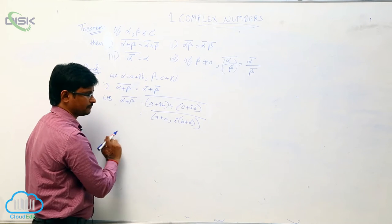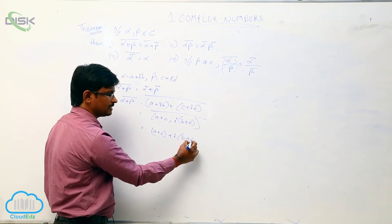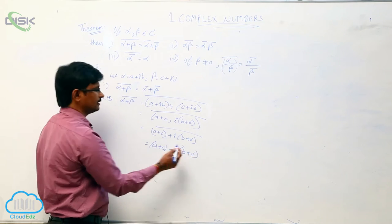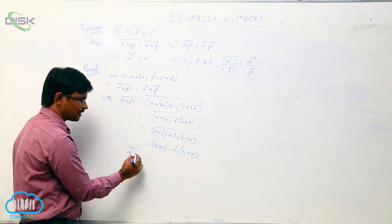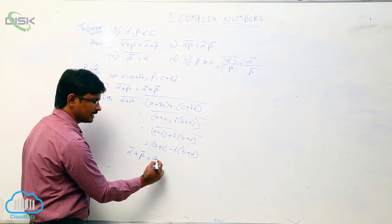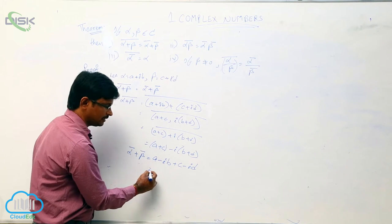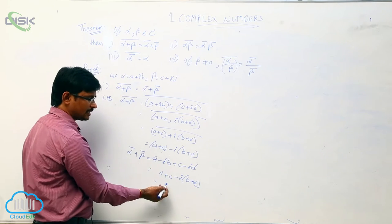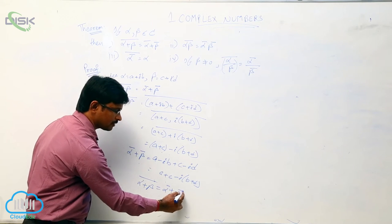We have A plus C plus i(B plus D), and the conjugate of this is A plus C minus i(B plus D). This is alpha plus beta complement. Now for the RHS, alpha complement is A minus iB, and beta complement is C minus iD. Adding these: A plus C minus i(B plus D). Observing LHS and RHS, both are the same. So we can say that the conjugate of alpha plus beta equals alpha conjugate plus beta conjugate.